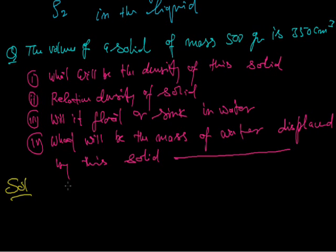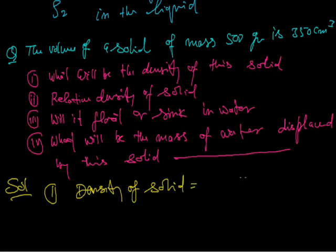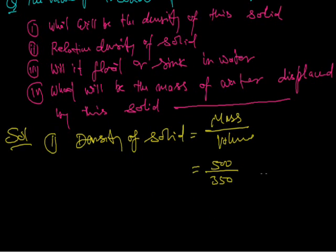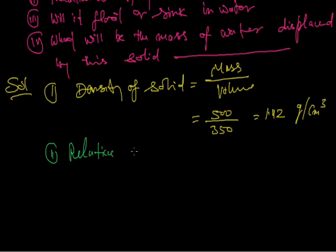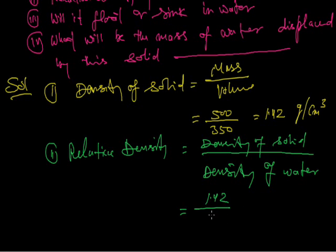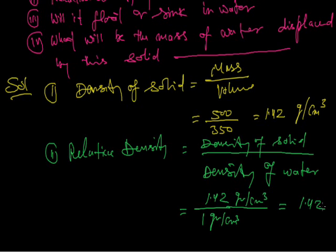Solution: Part 1 — Density of solid = mass/volume = 500/350 = 1.42 g/cm³. Part 2 — Relative density = density of solid / density of water = 1.42 / 1 g/cm³ = 1.42 (unitless, since it is relative density).